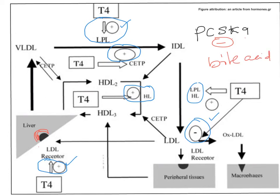T3 and T4 have an effect on 7-alpha hydroxylase, the rate-limiting enzyme in bile acid synthesis. Cholesterol is diverted into bile acid formation in the liver, which helps manage cholesterol levels in the liver to a certain extent, even though it doesn't really affect LDL cholesterol concentration in the circulation directly.